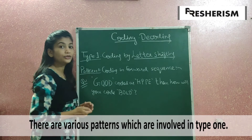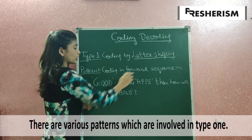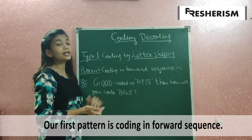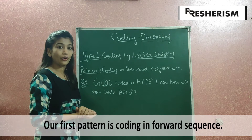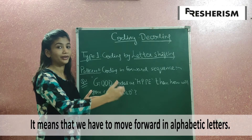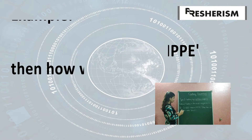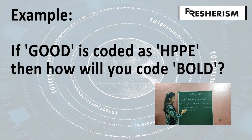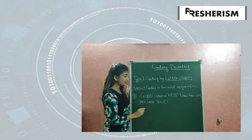Let's identify the first pattern. The first pattern is coding in forward sequence. Coding in forward sequence means we have to move forward in the alphabetical order. Let's check the first example: if 'good' is coded as HPPE, then how will you code 'bold'?